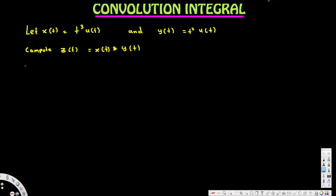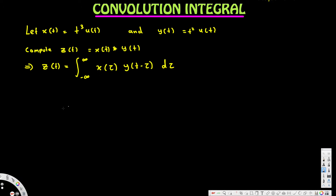When we have this convolution, we can express it in terms of an integral: z of t equals the integral going from negative infinity to infinity of x of tau times y of t minus tau d tau. The key steps are to find the graph of x of tau and also the graph of y of t minus tau, and based on that we will find our final answer.